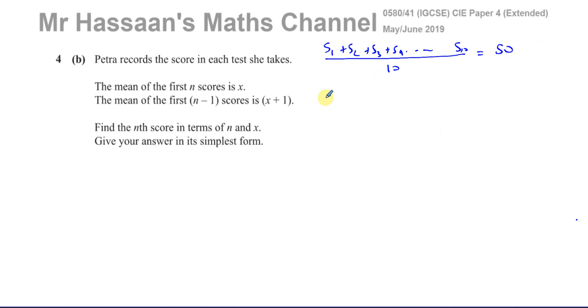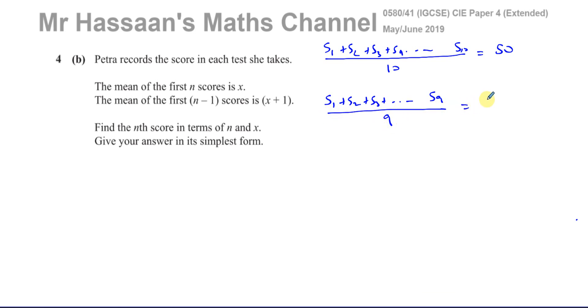And when you add the first 9 scores — S1 plus S2 plus S3, all the way to score 9 — and you divide by 9, you get x plus 1, which is 51 in this example.